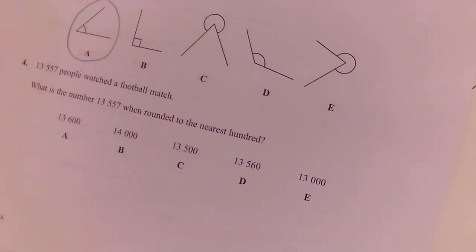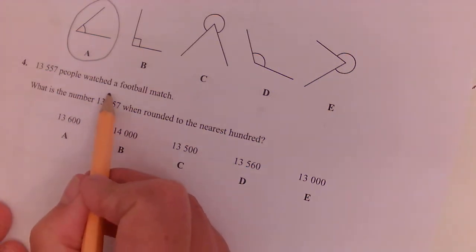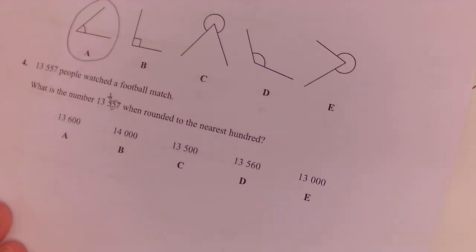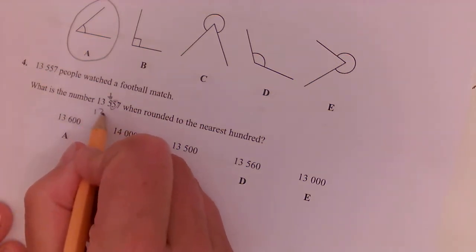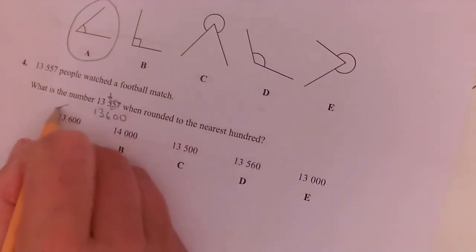13,557 people watch a football match. What is this when rounded to the nearest hundred? So we go to the hundreds, stop, look, decide, and the five rounds that up, so it is 13,600, which is A.